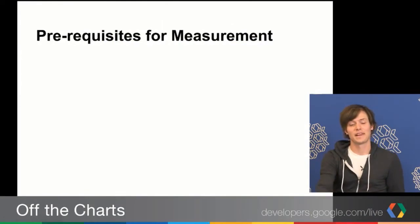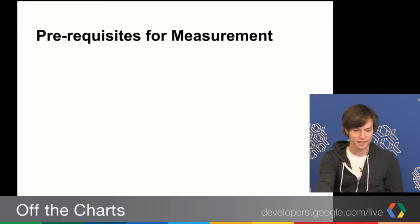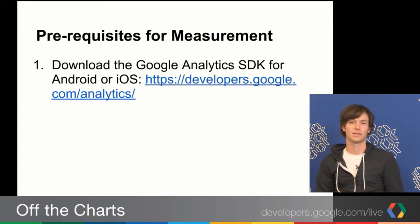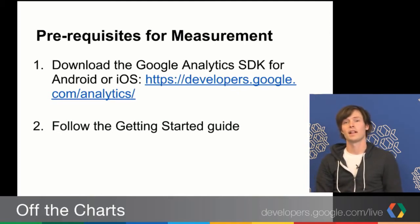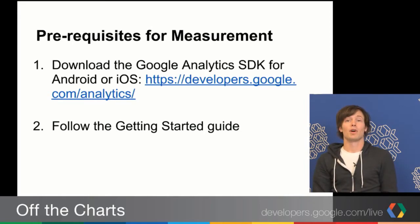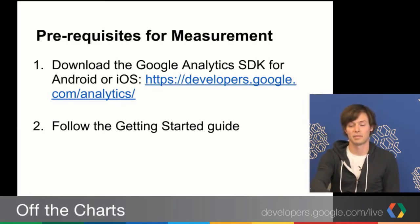There are some prerequisites for getting started with crash and exception measurement — luckily, really only two. Number one is download the GA SDK for Android or iOS at developers.google.com/analytics. Number two is follow the Getting Started Guide, which will get the SDK implemented in your app with basic measurement features in place. If you complete that guide, you'll already have implemented automatic crash measurement, so you'll have a leg up.